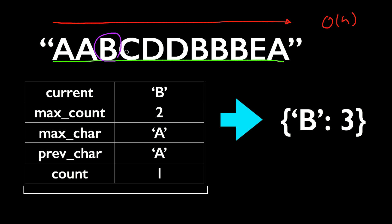So let's say we are looking at the third character, B. Current is B of course. Max_count is 2 because the longest sequence that we've seen so far consisting of a single character is AA right here, and the length of that is 2. Max_char is A because that sequence is consisted of two A's. Prev_char is A because the previous character to the current character is A. Count is 1 because that's the length of the current sequence of a single character we are examining, which is just a single character B.